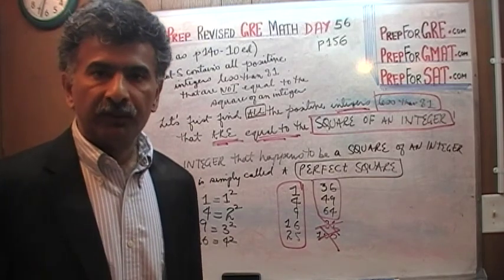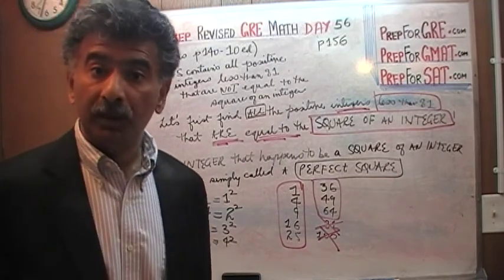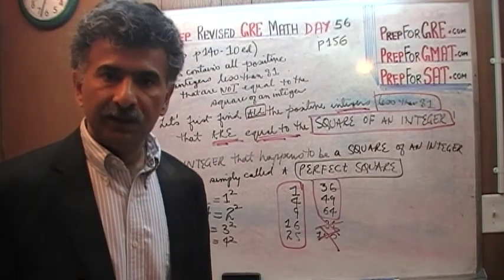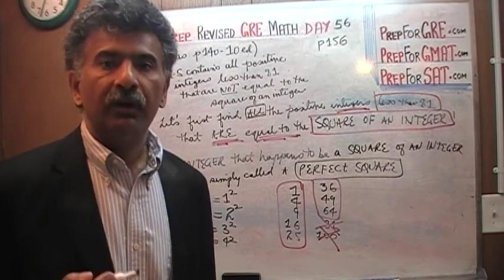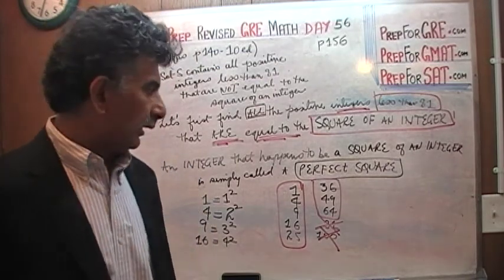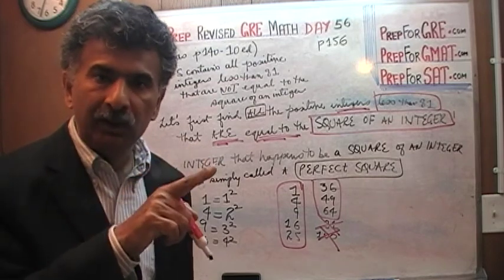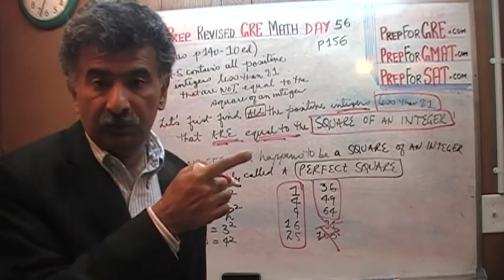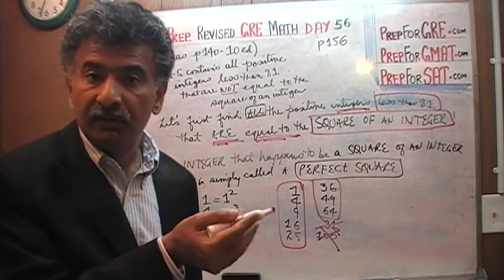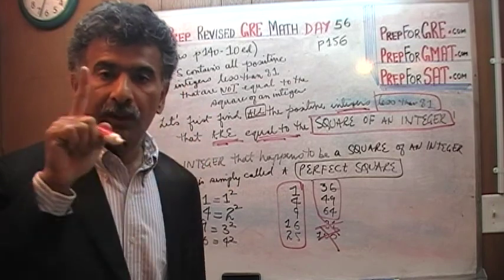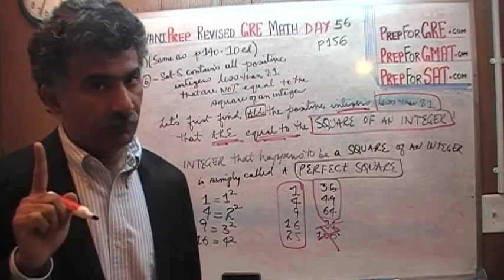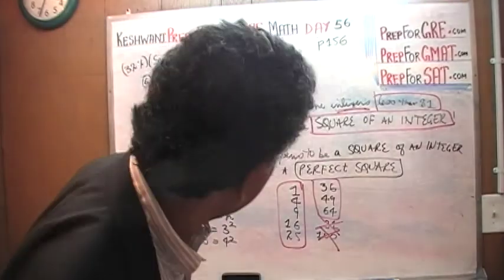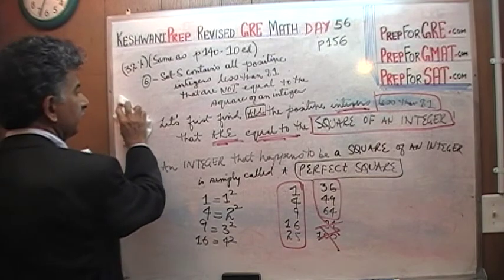To put it the awkward way they phrase it: there are 8 integers less than 81 that happen to be the square of another integer. How many integers are there altogether? Since we are looking for positive integers, we start with 1 — because zero is neither positive nor negative.